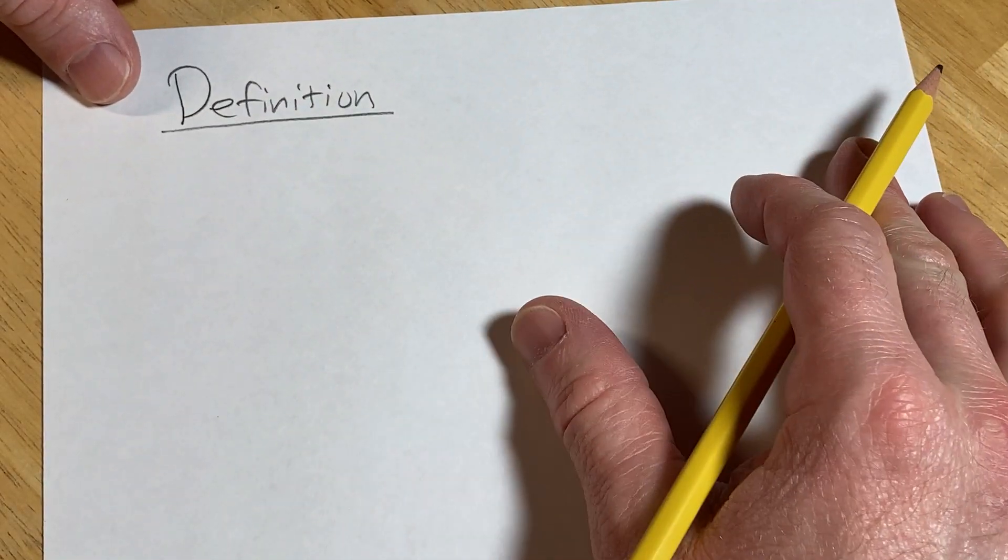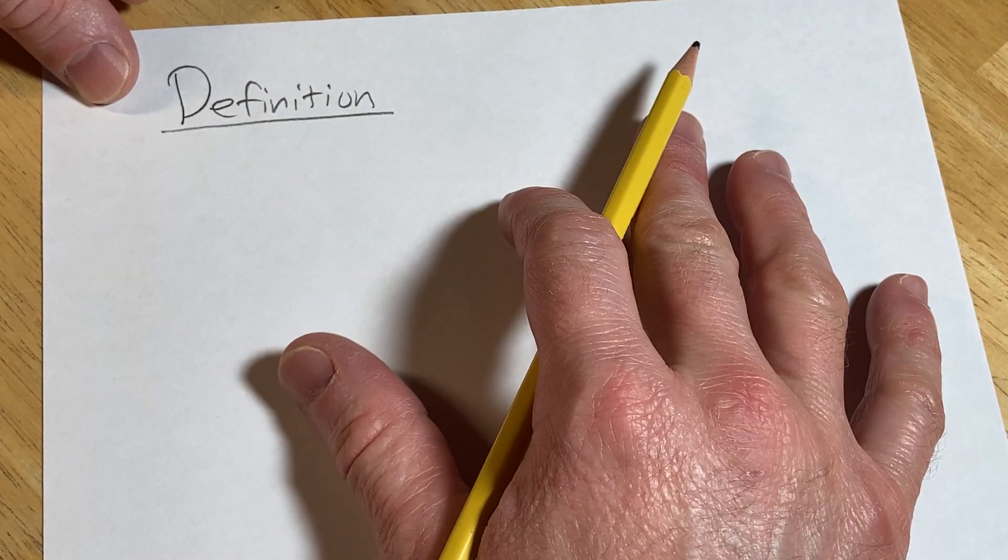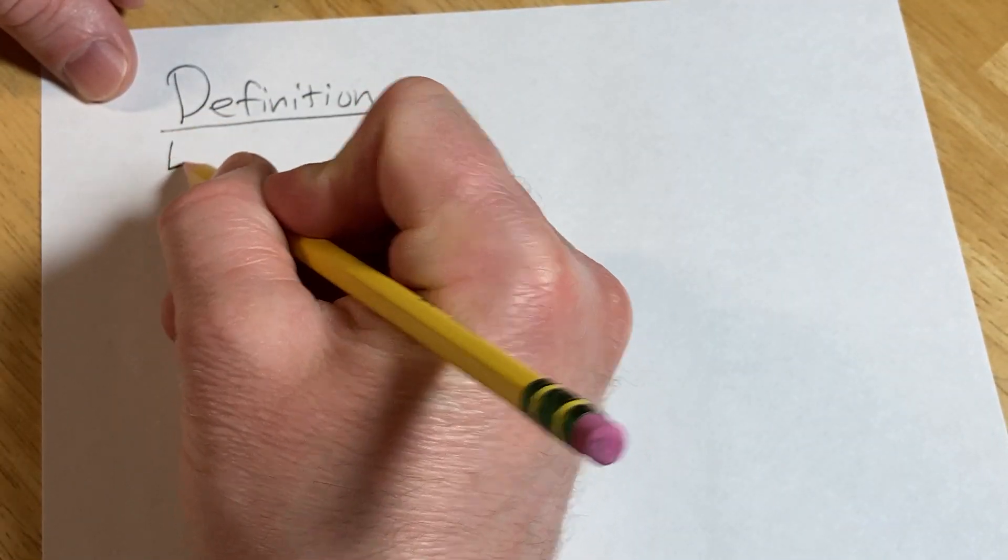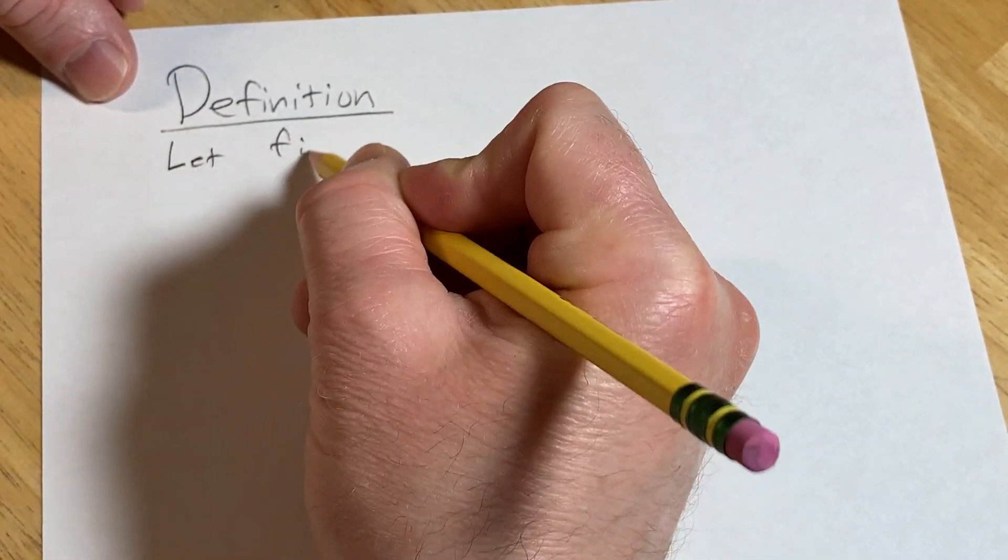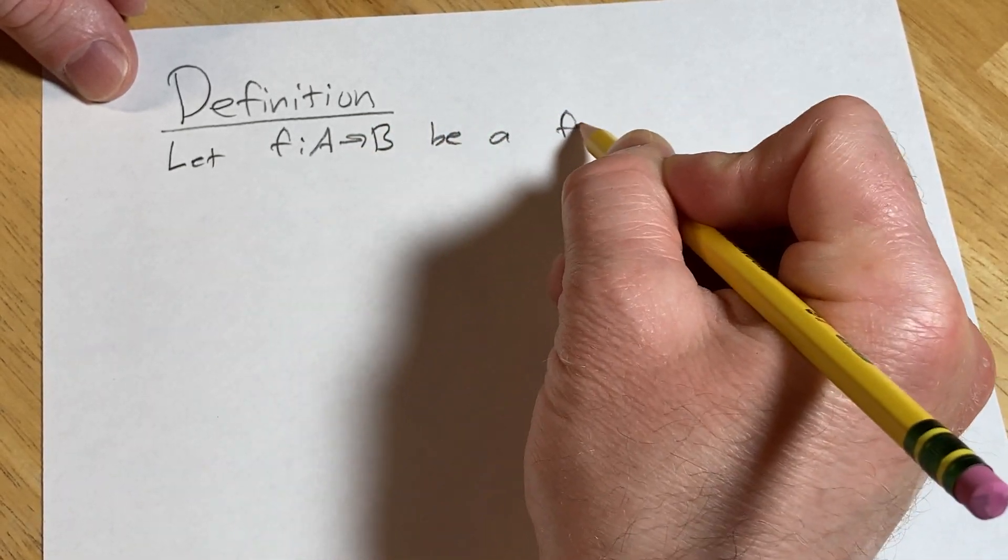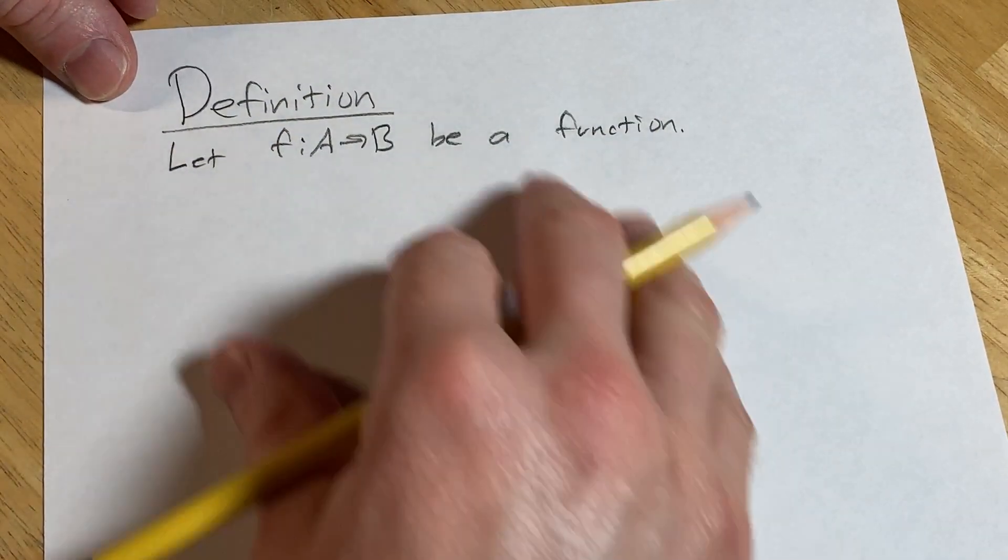Let's do it differently. Let's define bijection a different way. So let f from A to B be a function, and let's define it in a more compound way.